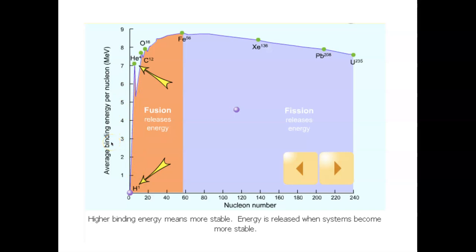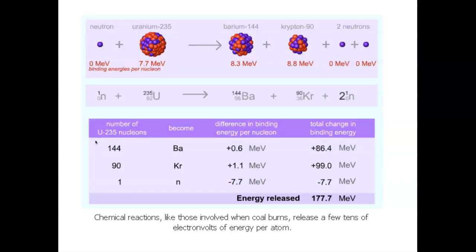There's more energy released in nuclear fusion than fission because the jump in binding energy per nucleon is larger — going from hydrogen isotopes to helium is a bigger leap than going from uranium to its fission fragments. This confirms the greater mass defect and energy release in fusion. For this course, you need to identify that a slow-moving neutron splits a fissionable atom into fragments with more neutrons and energy released.